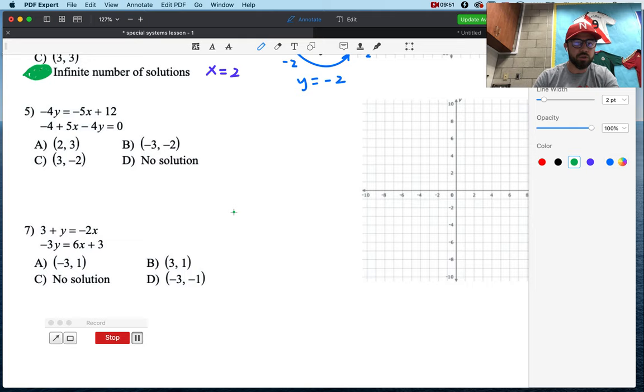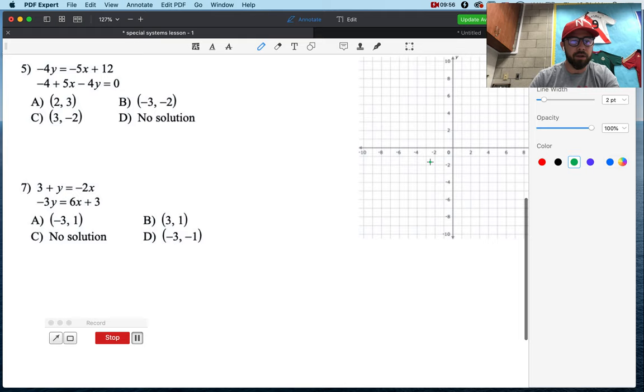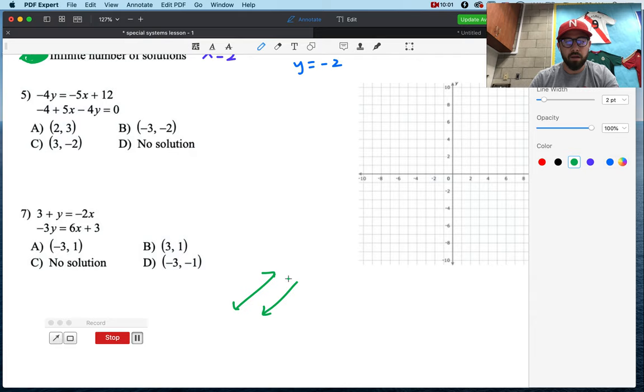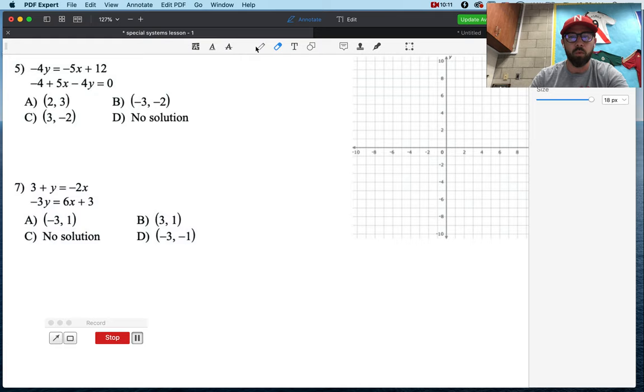Remember, what we want to do, if we get something like, well, shoot, what do we want to do? Let's do 7 on our own, because remember, if we get lines that are parallel, it's no solution. And I don't know that number 7 has that going on, but I'm hoping it does, because I'm hoping we can at least practice that for one problem.